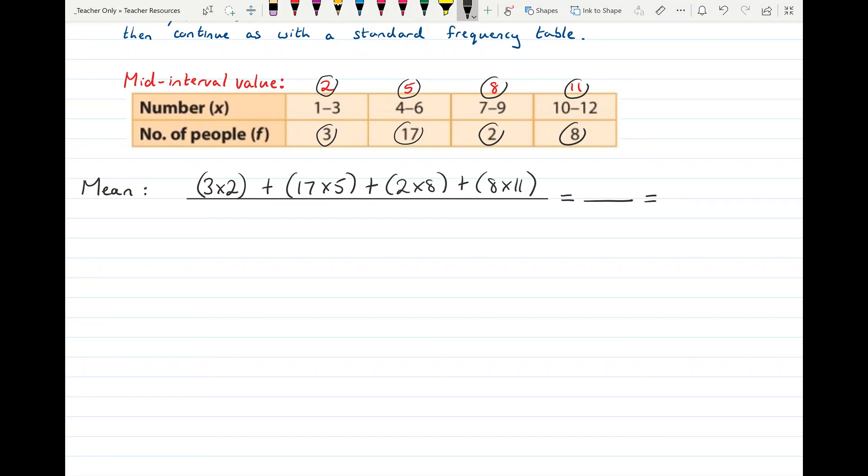And we can calculate all that on the top to find the total number, which is 195. And then we need to divide that by the number of people, so our frequency, and that's 3 plus 17 plus 2 plus 8, which is 30. So if we divide 195 by 30, we get 6.5.